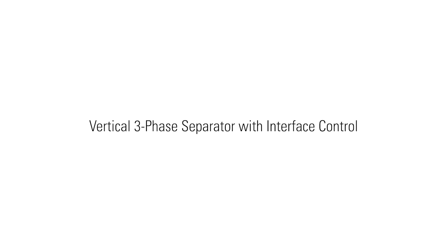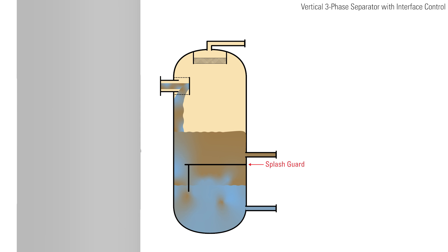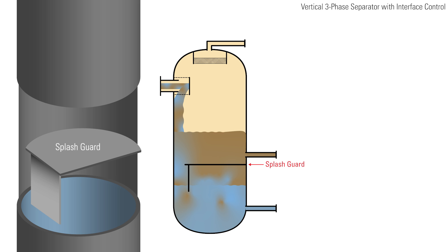In a vertical three-phase separator with interface control, the emulsion enters the vessel and immediately hits the inlet diverter plate, separating the bulk of the gas upon entry. The inlet diverter also directs the emulsion down along the sidewall, minimizing disturbances to the fluid. Lower in the vessel, the emulsion encounters a splash guard to further minimize agitation. This baffle is open and allows the emulsion to flow downward while protecting direct interaction with the interface level controller to prevent a false reading of the fluid level.